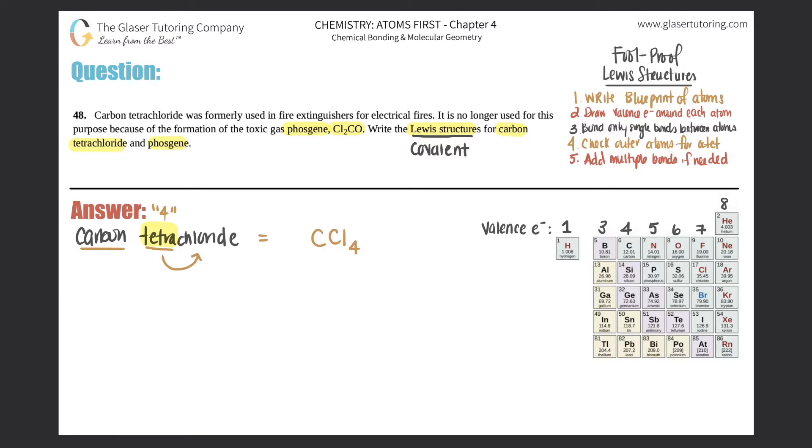Now, since we know that, we should be able to draw the Lewis structure for carbon tetrachloride. So who is the central atom? It's always the least electronegative. So between carbon and chlorine, which one is the less electronegative out of the two? Well, remember your electronegativity trend. From left to right, electronegativity will always increase. And as you go from top to bottom down a group, electronegativity will always decrease. And since carbon is over here, and chlorine's over here, and we increase from left to right, that means that carbon would be the less electronegative.